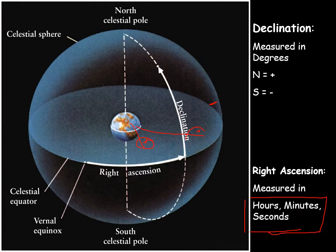A star that is two hours of right ascension ahead will be overhead two hours earlier than another star. Earth rotates 360 degrees in 24 hours, so that's 15 degrees per hour. Every hour the Earth rotates 15 degrees, which means every four minutes it goes one degree. That's why right ascension is measured in hours rather than degrees.